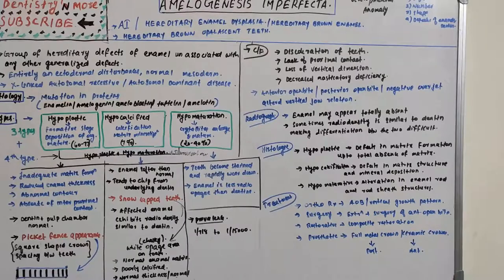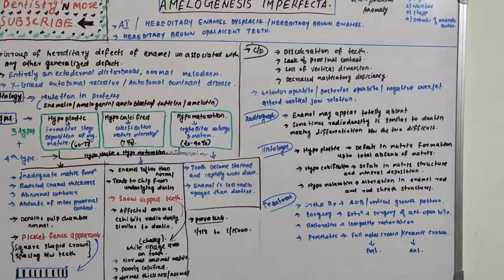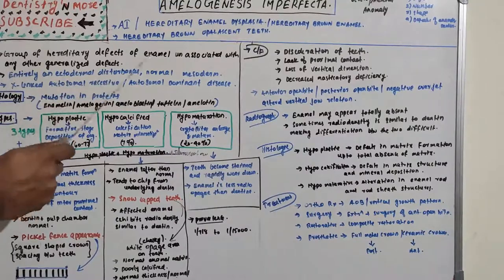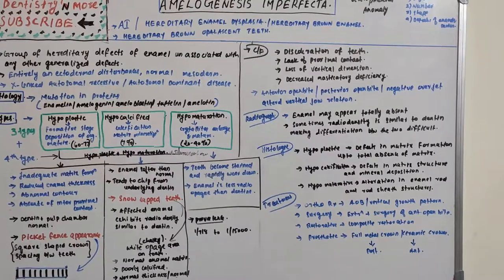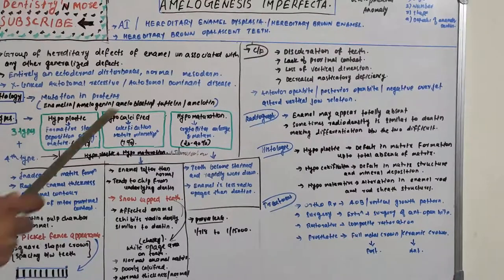Amelogenesis Imperfecta is a group of hereditary defects of enamel not associated with any other generalized defects — it solely and exclusively attacks enamel. It is an entirely ectodermal disturbance; normal mesoderm is present. Since ectoderm gives rise to enamel, this is purely an ectodermal disturbance. Genetically, it is transmitted as X-linked, autosomal recessive, or autosomal dominant.